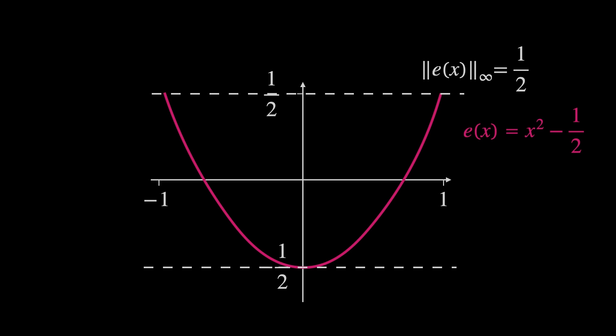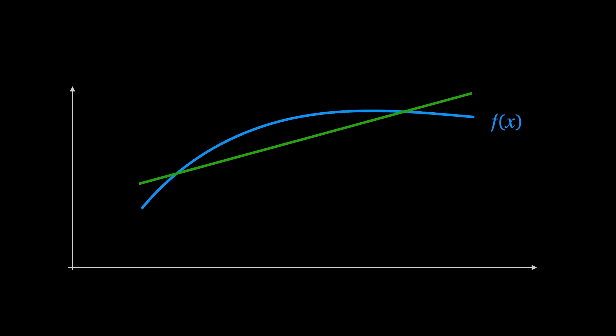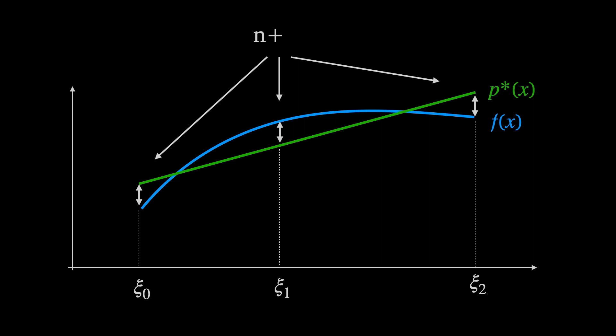Notice that there are three points on the x-axis where the maximum error is observed. This is a general property of minimax approximation: for a best minimax approximation from Pₙ to a continuous function, there will be n+2 points where the maximum error is observed. For a straight line, n=1, giving three such points, labeled ψ₀, ψ₁, and ψ₂. The errors also oscillate in sign — p(x) crosses f(x) between every point at which the maximum error occurs.